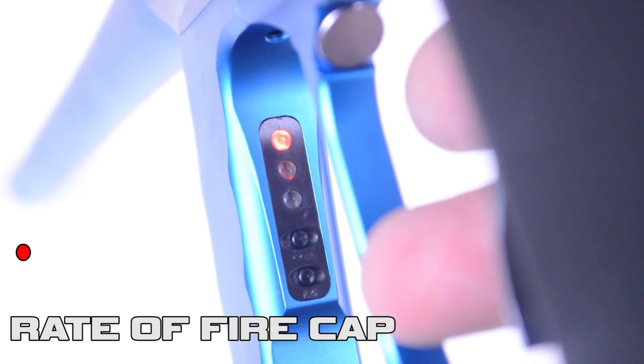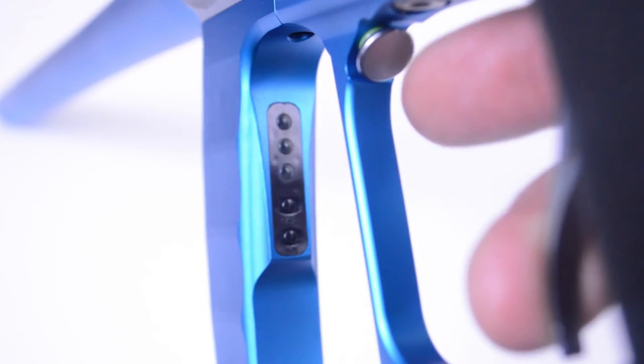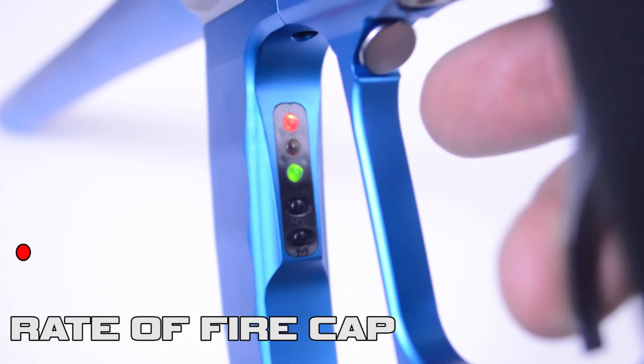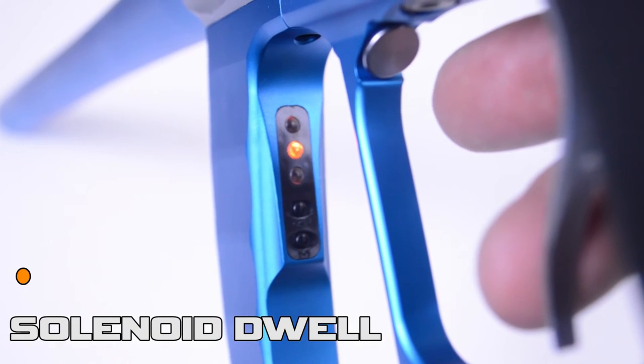Pressing and releasing the trigger once cycles through these parameters. Now let's adjust the solenoid dwell on your Valcom Proton. Enter programming mode and cycle until the orange light is showing. This is the solenoid dwell or valve timing parameter.